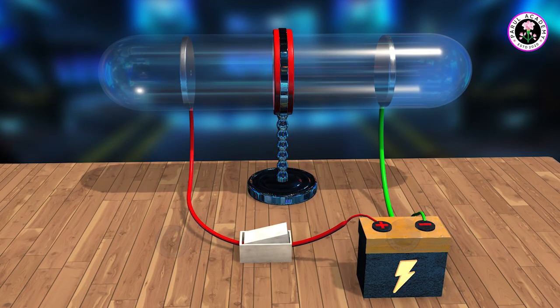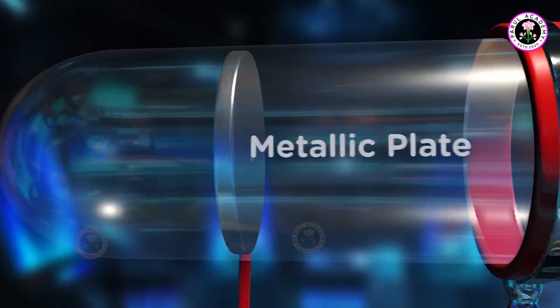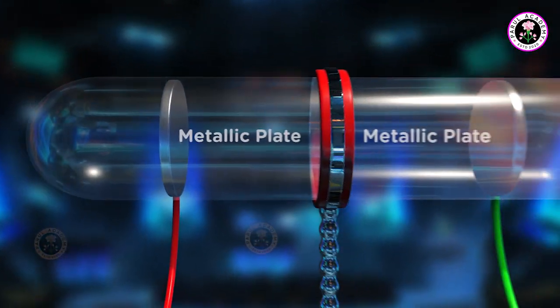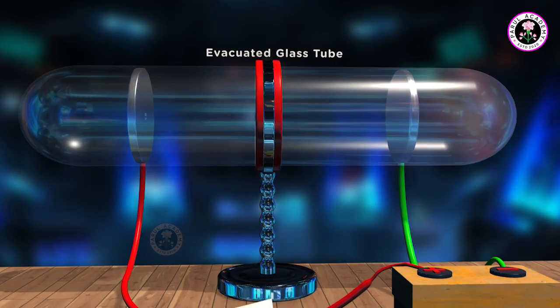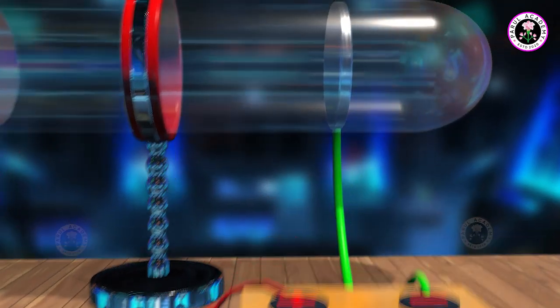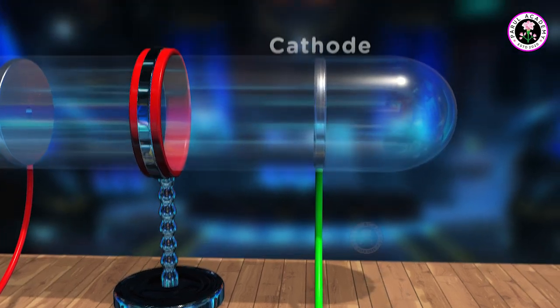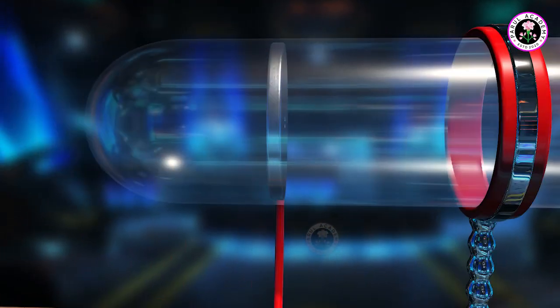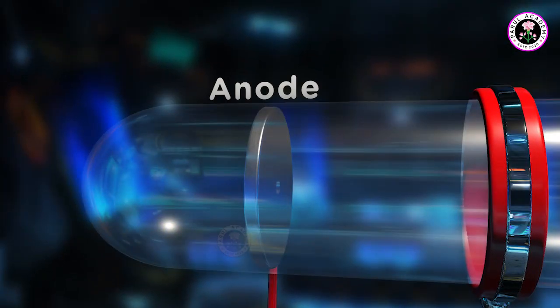Structure of a cathode ray tube: we add two metallic plates across two opposite ends of an evacuated glass tube. Now these plates are connected to a high voltage battery. The plate which is connected to the negative end of the battery is called cathode and the plate which is connected to the positive end of the battery is called anode.